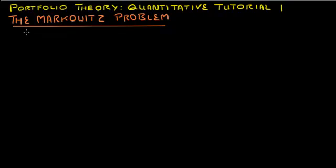Let's cover the Markowitz optimization problem. Essentially, Markowitz was trying to minimize a portfolio's variance subject to certain constraints.